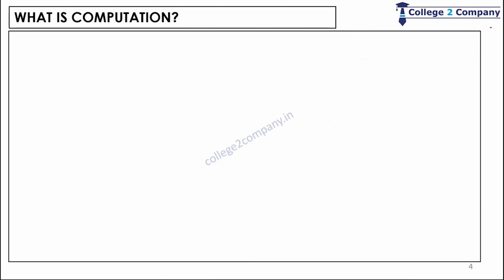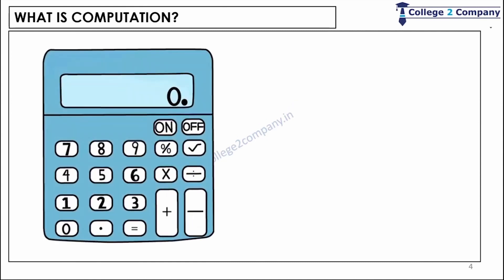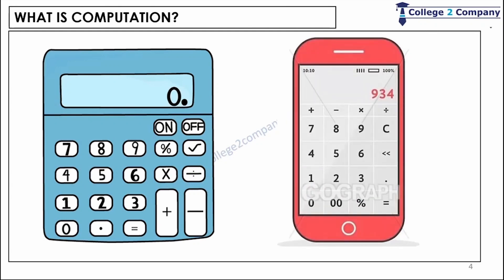There are many computational devices that are available. For example, a calculator is one of the simplest computational devices that allows us to perform basic mathematical operations, sometimes even a little more. For example, the modern cell phone or your smartphone has several features using which you can compute.